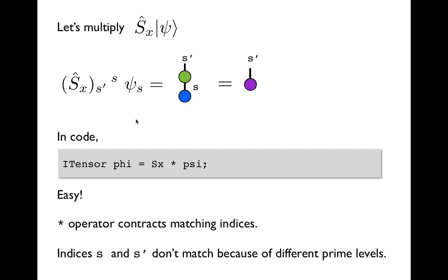Now the reason the tensor contraction happens the right way is because we set everything up correctly to begin with. So we gave Sx an s index that matches psi's s index. Those indices are compatible with the same index. And so the star operator will realize this and automatically contract them. The s prime index is different. It doesn't have any matching index on psi. So it will remain uncontracted.